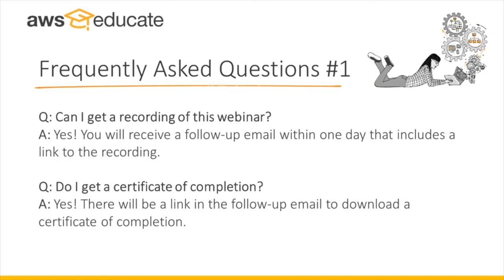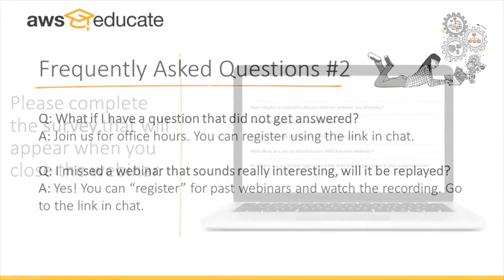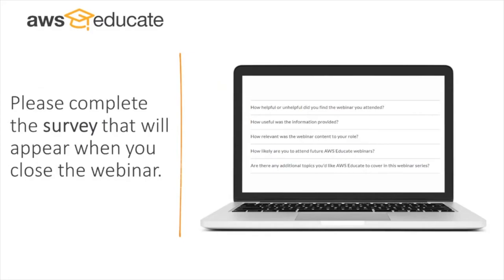I think bringing in outside perspectives could be fairly seamlessly integrated, both synchronous and asynchronous. As we move to more synchronous classes, we need to be aware of the burden on meeting software and the internet in general. But yes, bringing in outside perspectives and people in the community to speak to our students is always a great idea, as long as they're qualified and it's appropriate to do so. I think there's a lot of that going on at Wake Tech already and I think there will be more in the future.